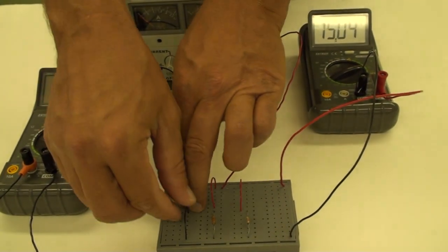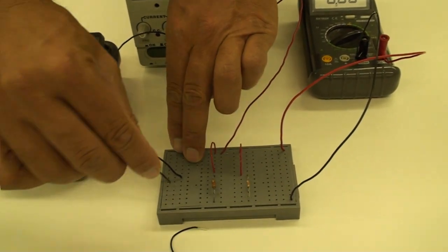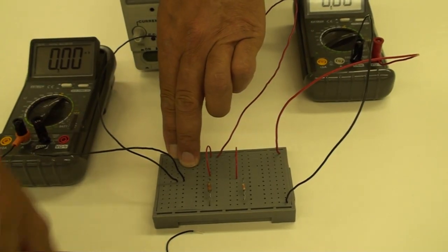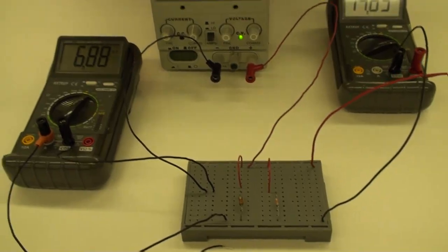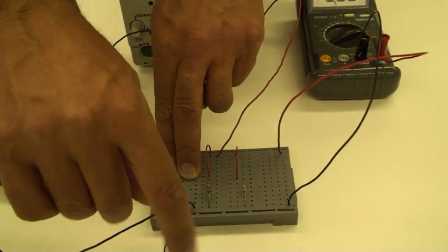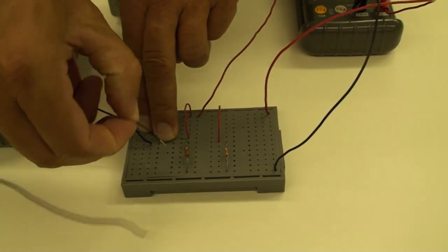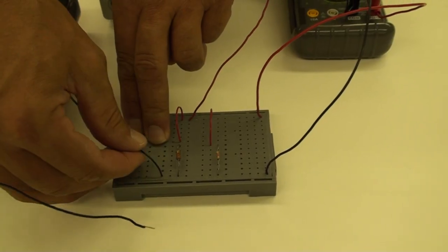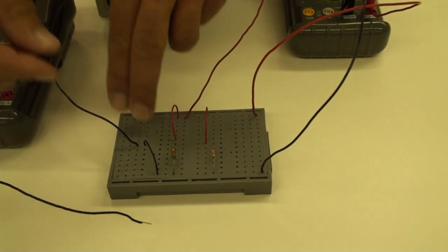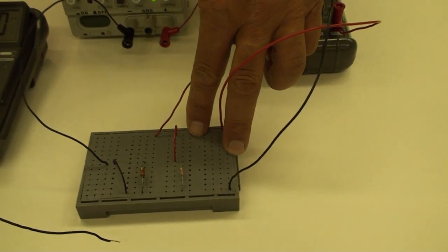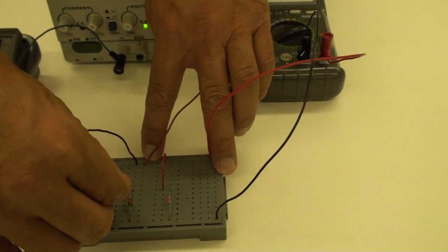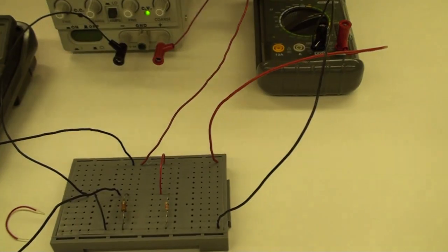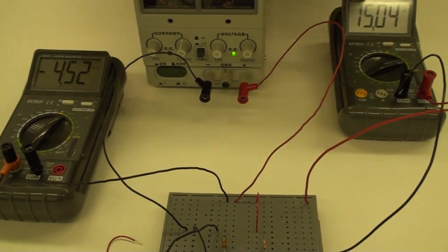These current measurements are made in practice by replacing each jumper in turn by the ammeter. Replacing the black jumper allows measurement of I, the total current through the entire circuit. Replacing the first red jumper allows measurement of I1, and replacing the second red jumper allows I2 to be measured.